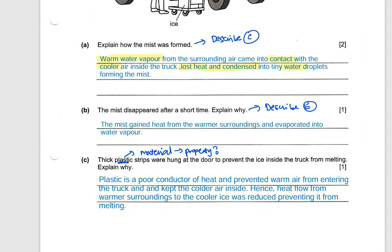The property is plastic is a poor conductor of heat. So we prevent warm air from entering and kept the cooler air inside. So the heat flow from warmer to cooler was reduced. So that's the science concept. So this is my property. Then this is the science concept. Preventing it from melting is the link. I think A and B are standard questions, but C is slightly harder.